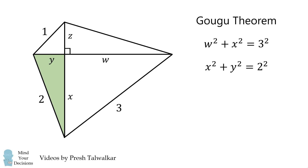In this right triangle, we have x squared plus y squared is equal to 2 squared. Then, in this right triangle, we have y squared plus z squared is equal to 1 squared.